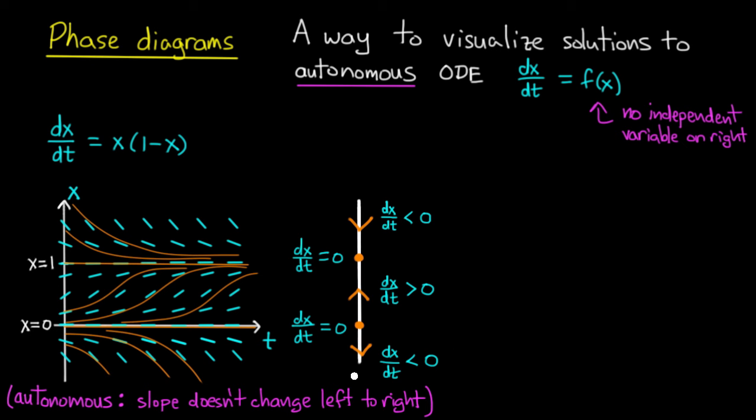And that's it. That's our phase line. So we have a line with dots to indicate where the solution is standing still, and arrows to indicate where it's moving and in which direction it's moving.